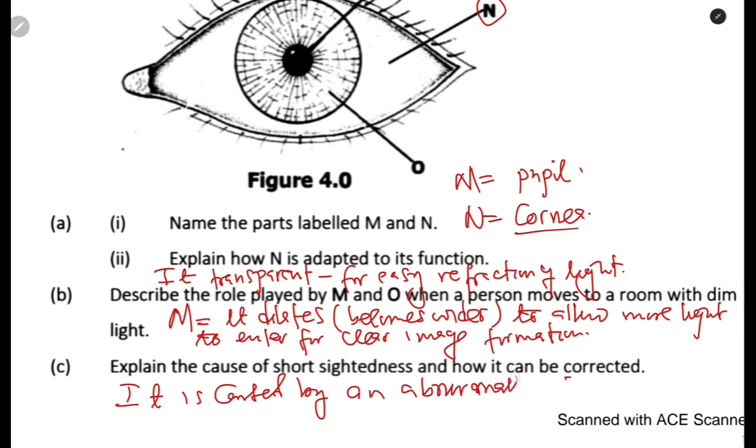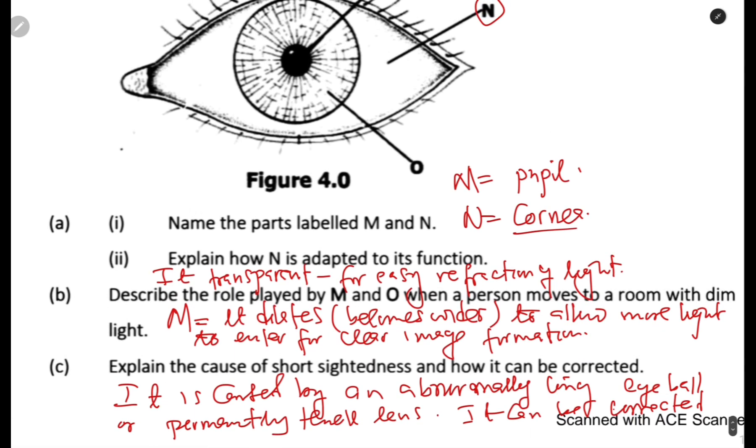An abnormally long eyeball. So, abnormally long eyeball or permanently thick lens. Now, it can be collected, it can be corrected by using concave lens.